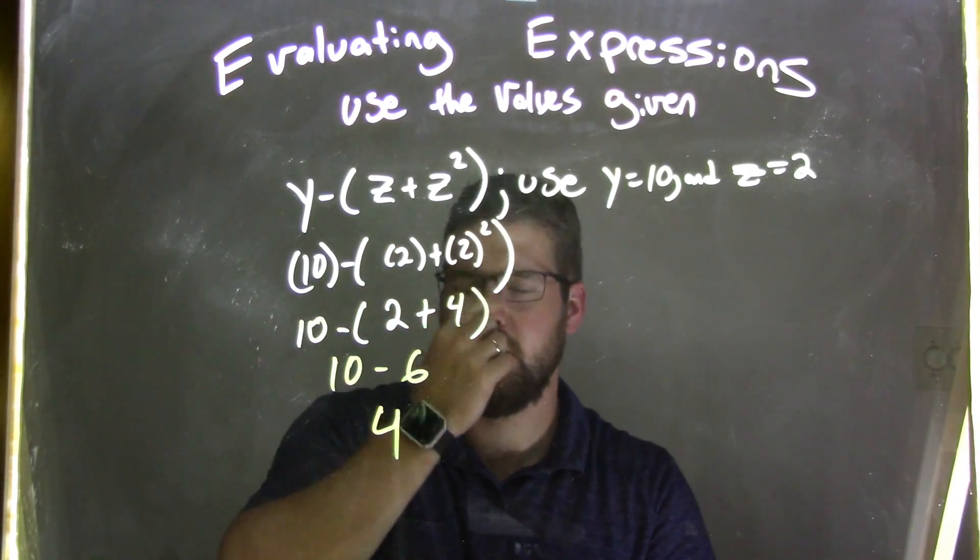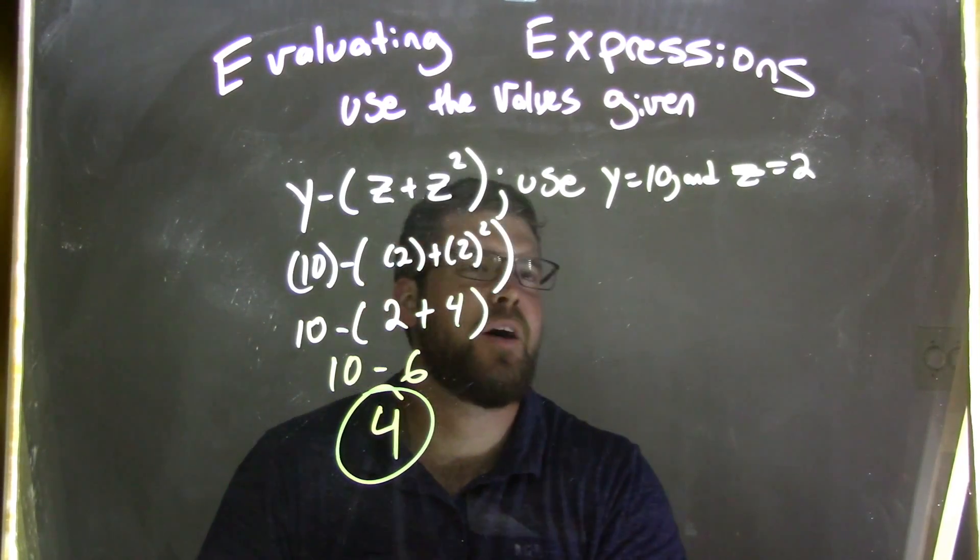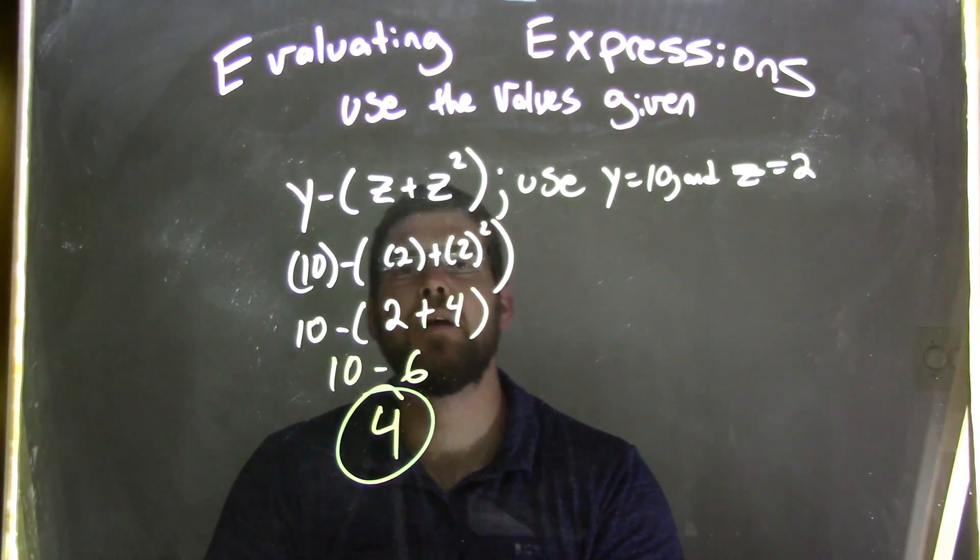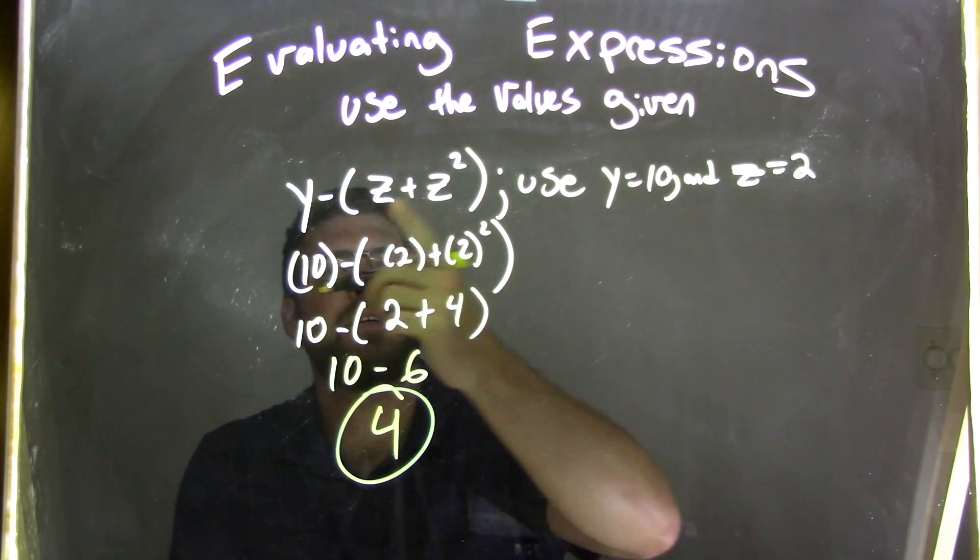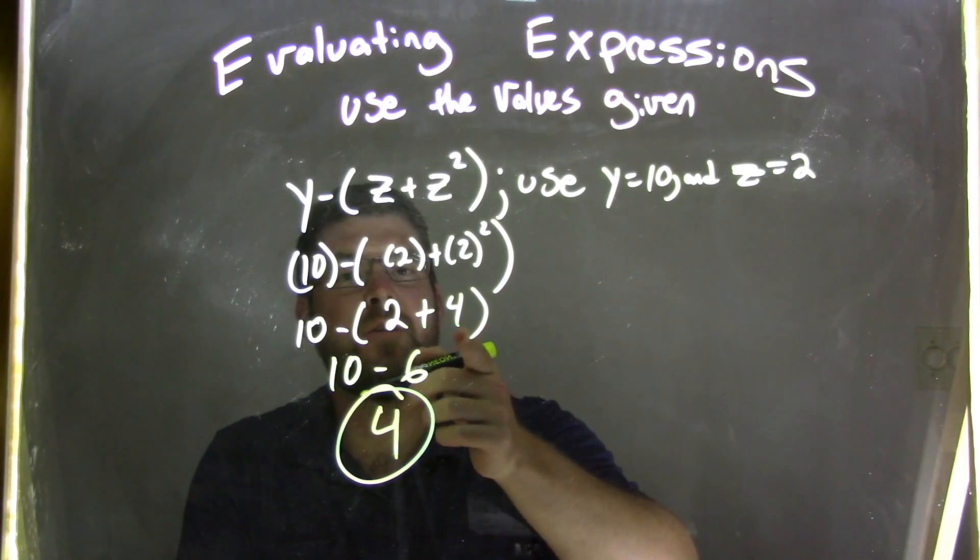So if we simplify that, or sorry, recap that. We have 10 and z. 10 is y and z is 2. So 10 goes in for y and z is 2. Plug that in. 10 minus 2 plus 2 to the second power. 2 to the second power is 4. 2 plus 4 is 6, and 10 minus 6 is 4.